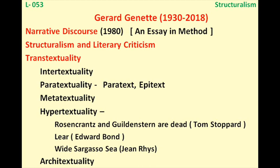The key concept given by Genette is transtextuality. You may have heard the term intertextuality, but he introduced the broader term transtextuality. According to him, when a text relates to other texts — whether works within the same tradition or outside it — that is transtextuality. Sometimes this relation is obvious and easily seen; sometimes it is concealed and not easily visible.